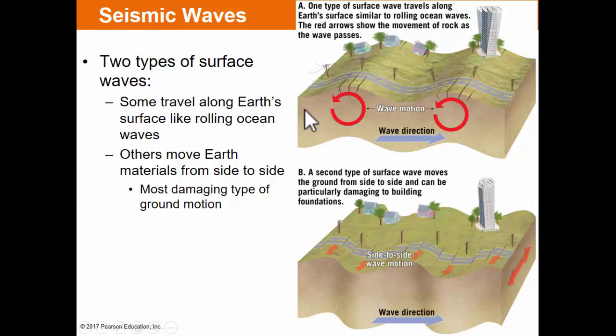There are also two types of surface waves: some roll the Earth like an ocean, and others cause the Earth to slide back and forth side to side. Most of the damage from seismic waves comes from these surface waves. The ones that move material side to side tend to be the most damaging.